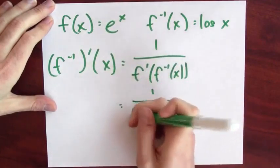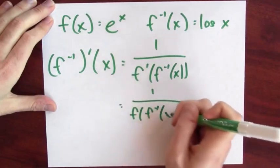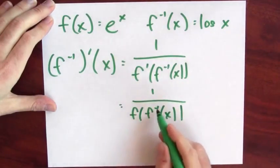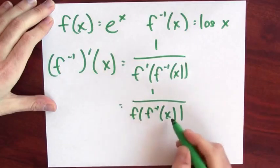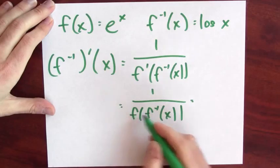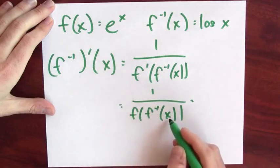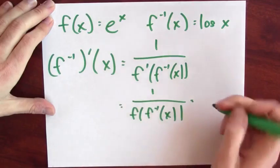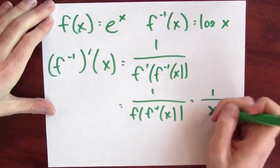Now the neat thing here is that the derivative of e to the x is itself. So f prime is just f, and I'm left with f of f inverse of x. It's e to the log of x. But log of x tells me what I have to plug into e to get out the input. f of the inverse function of f is just the same input again. So this is 1 over x. So the derivative of log x is just 1 over x.